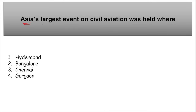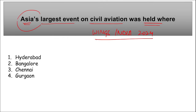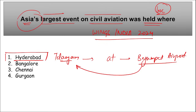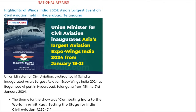First question: Asia's largest event on civil aviation was held where recently? The name of this event is Wings India 2024. It was held in Hyderabad, Telangana, at Begumpet Airport. It was from 18th to 21st of January. The theme was 'Connecting India to the World in Amrit Kaal, Setting the Stage for India Civil Aviation 2047.'